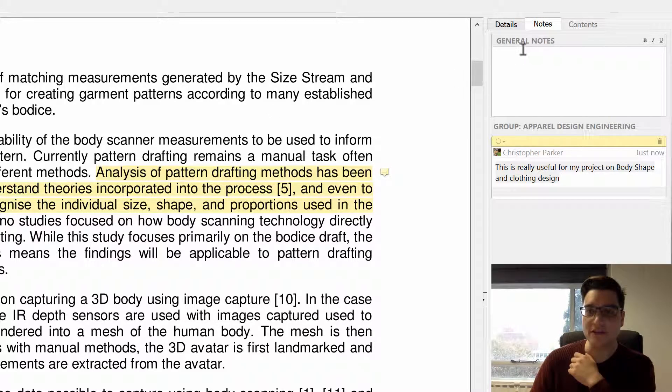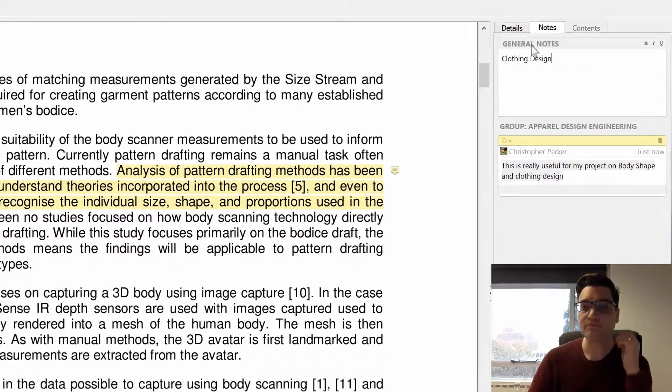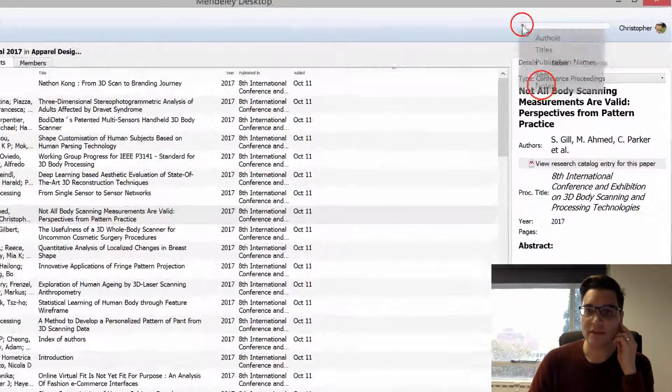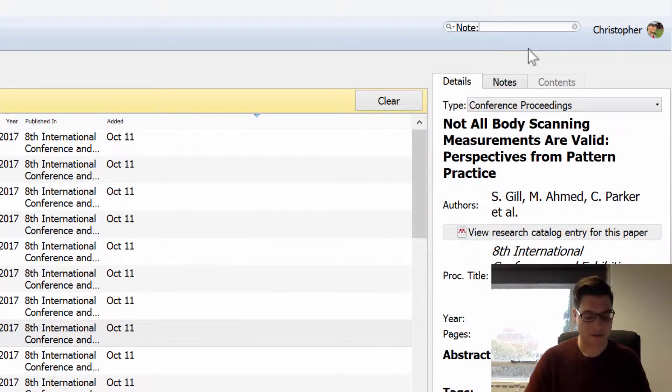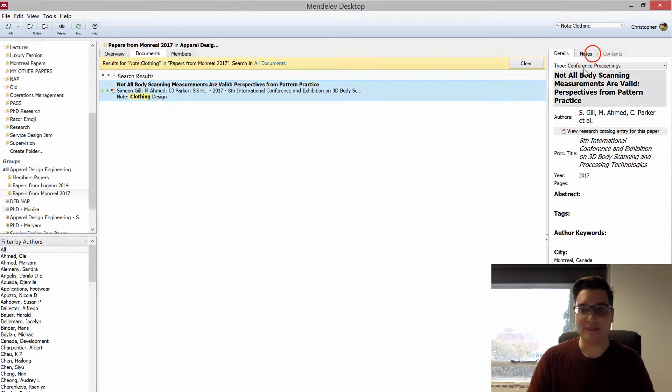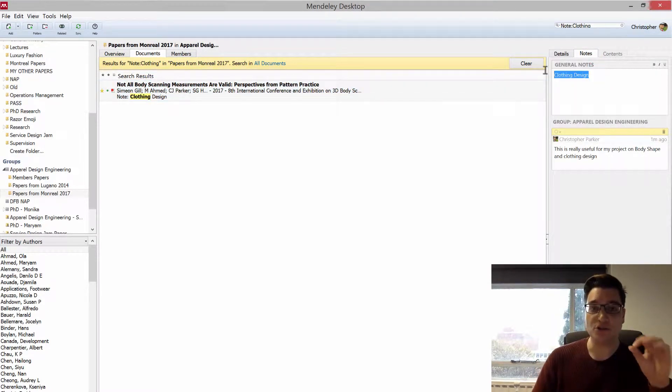So when you search in notes, it searches in the general notes. So if I'm now putting here clothing design as a tag, I can close the paper, click magnifying glass, and notes, clothing, you'll see that the paper is there. So, when you're able to search in a note, make it searchable, use general notes.